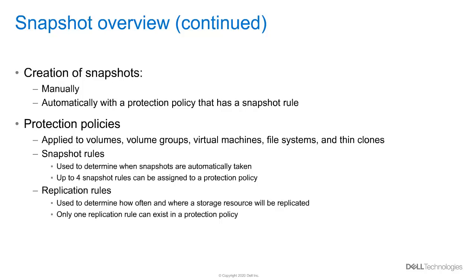The second type of rule, which is a replication rule, is used to determine how often a storage resource will be replicated to a remote PowerStore system. However, note that there can only be one replication rule per protection policy.